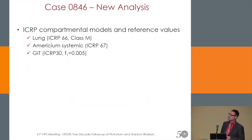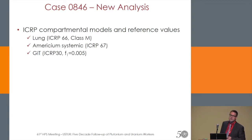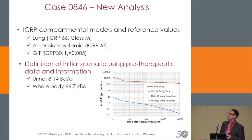For the new analysis I used the ICRP compartmental models and reference values. I used the lung model of ICRP Publication 66. The reference class assigned is type M material. I take the ICRP 67 systemic model for americium biokinetics, and the simpler ICRP 30 GI tract model with the reference F1 value of 5×10⁻⁴. The first step in modeling is to define the initial scenario using the pre-therapy data and information, which is a very complicated issue.